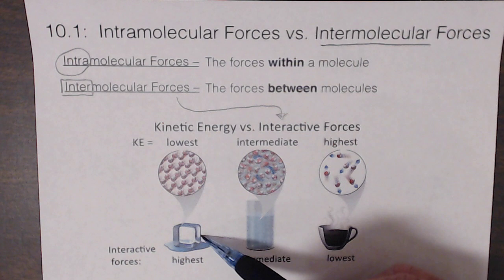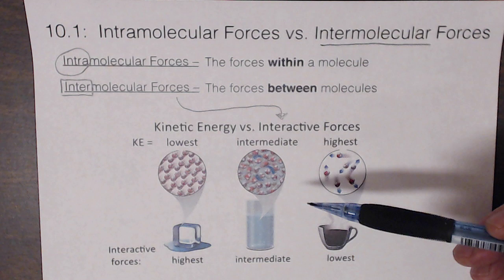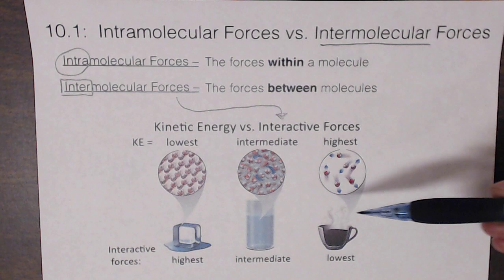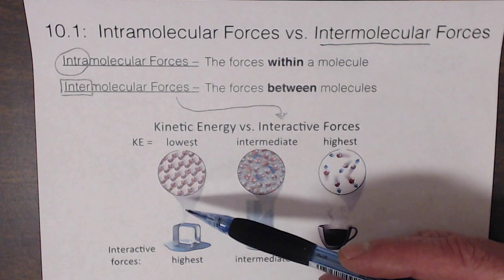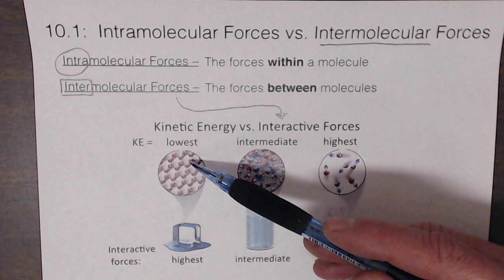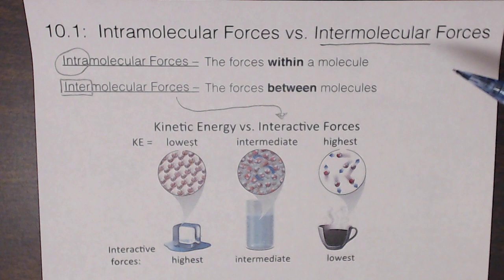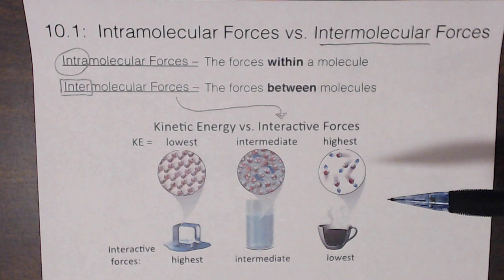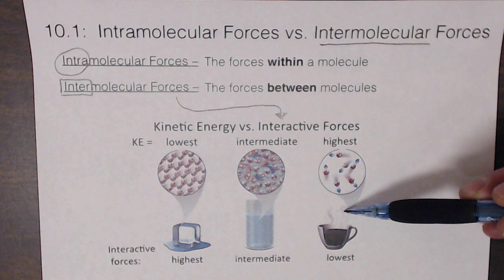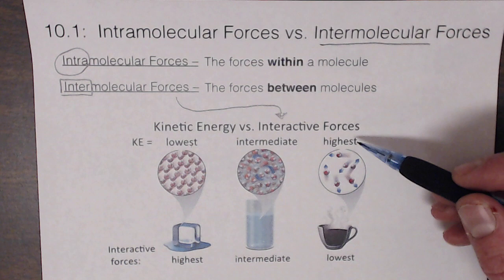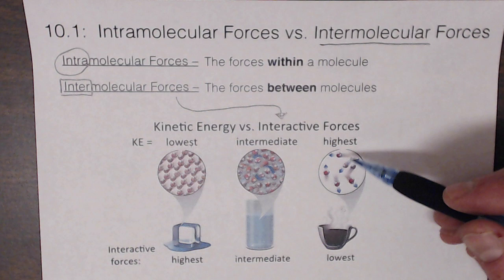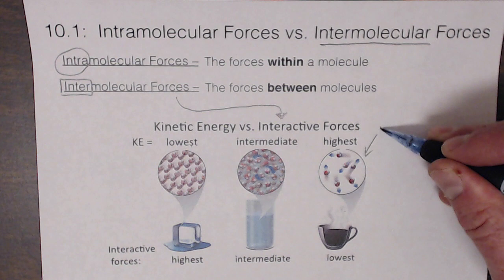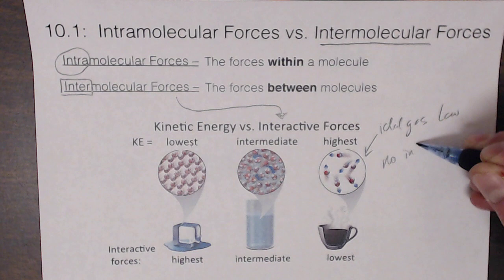An ice cube has the lowest kinetic energy compared to liquid water or steam. Because there's the lowest kinetic energy, the interactive forces are the highest — the molecules don't have a lot of motion, so they interact strongly with each other. A solid has the highest interactions, a liquid is intermediate, and a gas has the lowest interactive forces. In an ideal gas, there is no interaction.